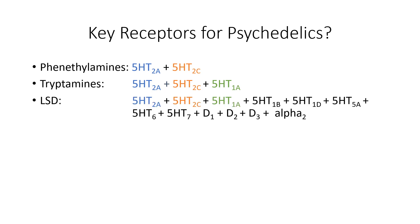LSD, however, binds to many different receptors. Like the tryptamines, LSD shares the 2A, 2C, and 1A receptors, but it also binds to more serotonin subtypes including 1B, 1D, 5A, 6, and 7. D stands for dopamine, so LSD also binds to the dopamine 1, 2, and 3 receptors. The last receptor it binds to is the alpha-2 adrenergic receptor, though I won't speak extensively to its pharmacology.